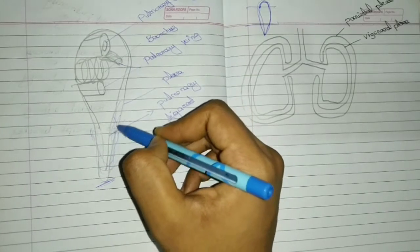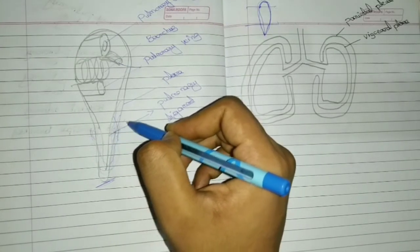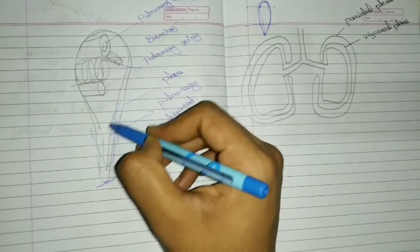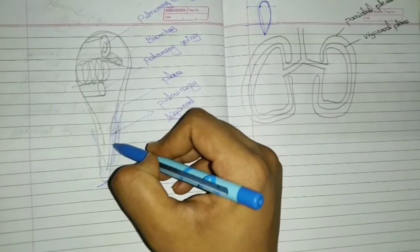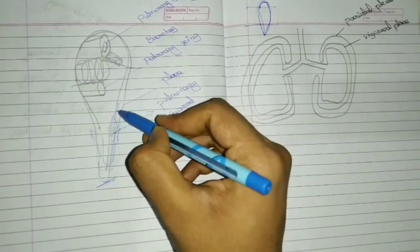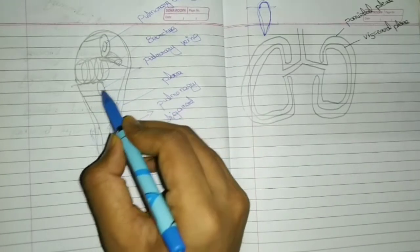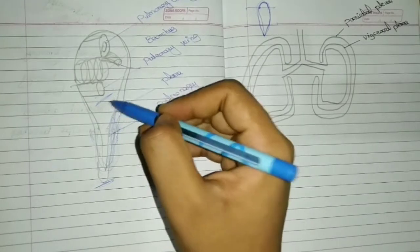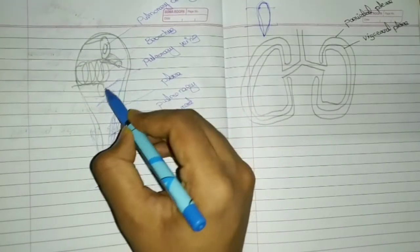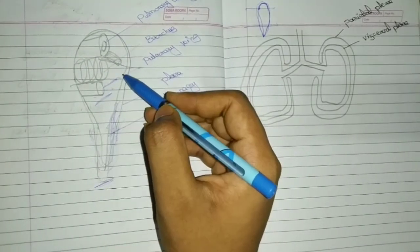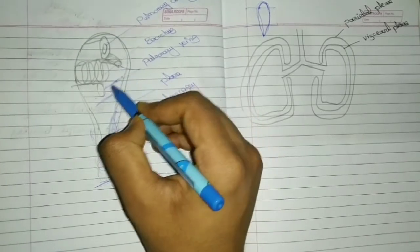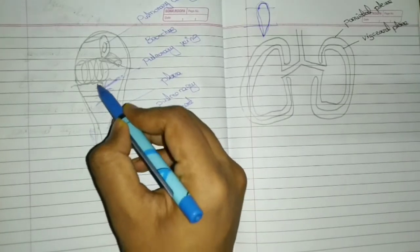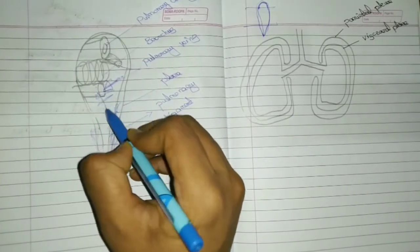This fold is filled with areolar tissue and also a few lymphatics. Its functions include dead space. It provides dead space for the pulmonary veins.